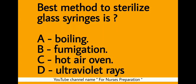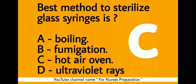Next question. The best method to sterilize glass syringes: option A, boiling; option B, fumigation; option C, hot air oven; option D, ultraviolet rays. The right answer is option C. The best method to sterilize glass syringes is the hot air oven.